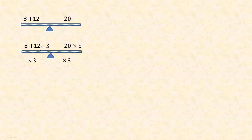The problem here is that we'd have to do 12 times 3 first because we multiply before we add. So 12 times 3 is 36. But 36 and 8 add to 44, while 20 times 3 is 60. It's no longer balanced, because I only multiplied the 12 by 3 — I didn't multiply the 8 by 3.